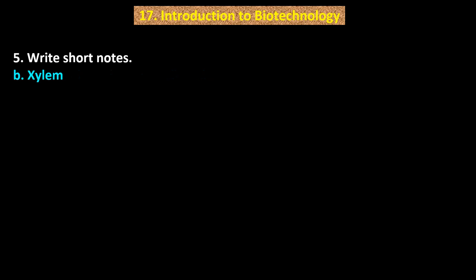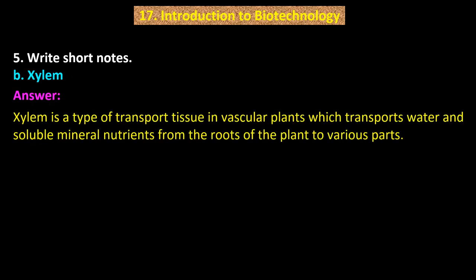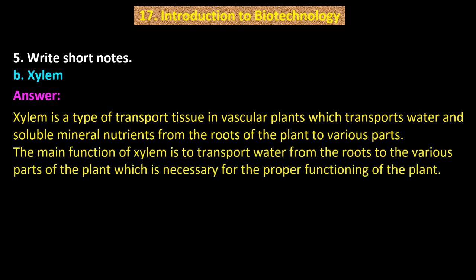B. Xylem. Xylem is a type of transport tissue in vascular plants which transports water and soluble mineral nutrients from the roots to various parts of the plant. The main function of xylem is to transport water from the roots to the various parts of the plant, which is necessary for the proper functioning of the plant.